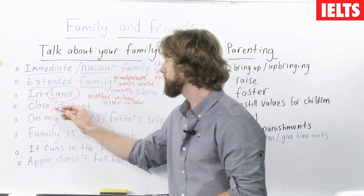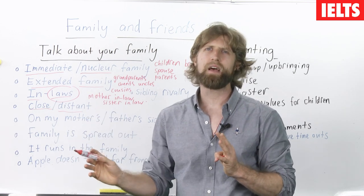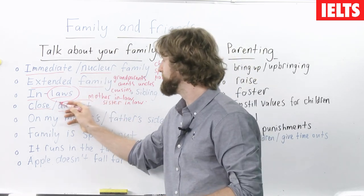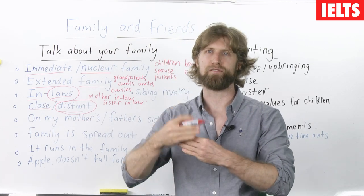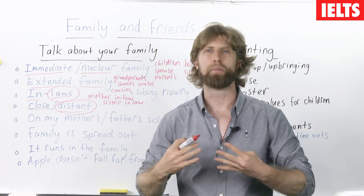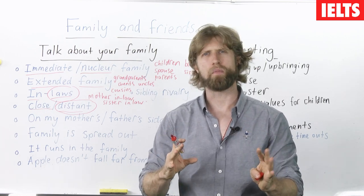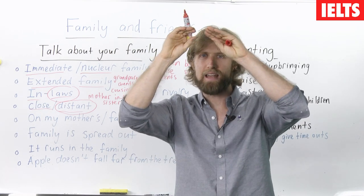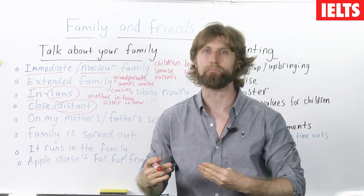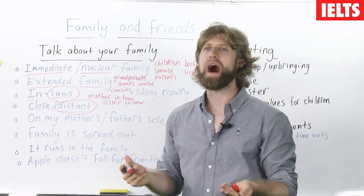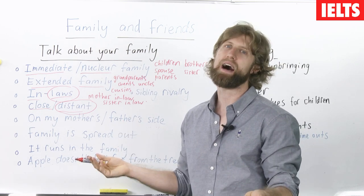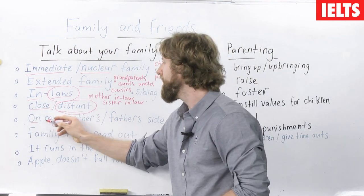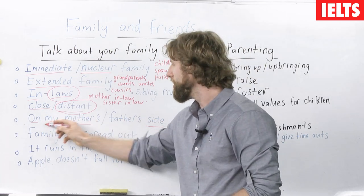We can also use the terms close or distant. A close family means your immediate family or people you often see. A distant relative can either mean they are very far away, or they share the same blood as you but are further along the lines of the family tree — kind of separated but you still share the same blood. So you can say, I have a distant cousin living in China that I don't speak to so often.